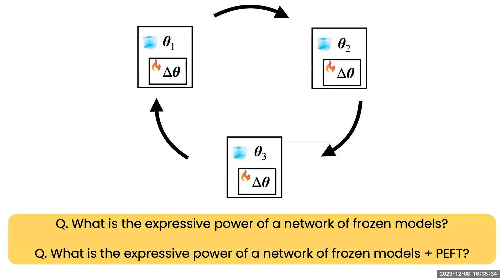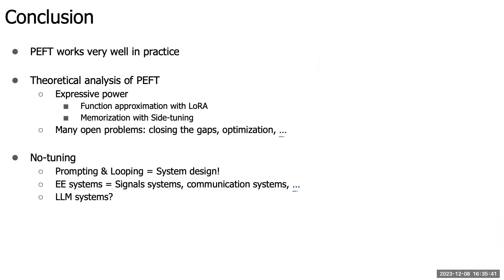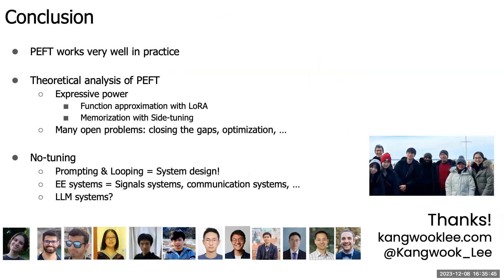We don't have any theory about what looped prompted models can do in systems, or what combining looping with fine-tuning gives. It's completely open. This prompting-plus-looping reminds me of systems design — I was trained as an EE student in signal systems and communication systems, designing linear and non-linear systems. I'm calling for developing a system theory for LLM systems. Thanks for listening, sorry for going over time.